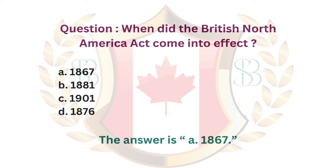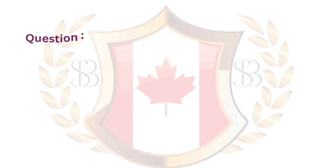Question. When did the British North America Act come into effect? a. 1867. b. 1881. c. 1901. d. 1876. The answer is a. 1867.